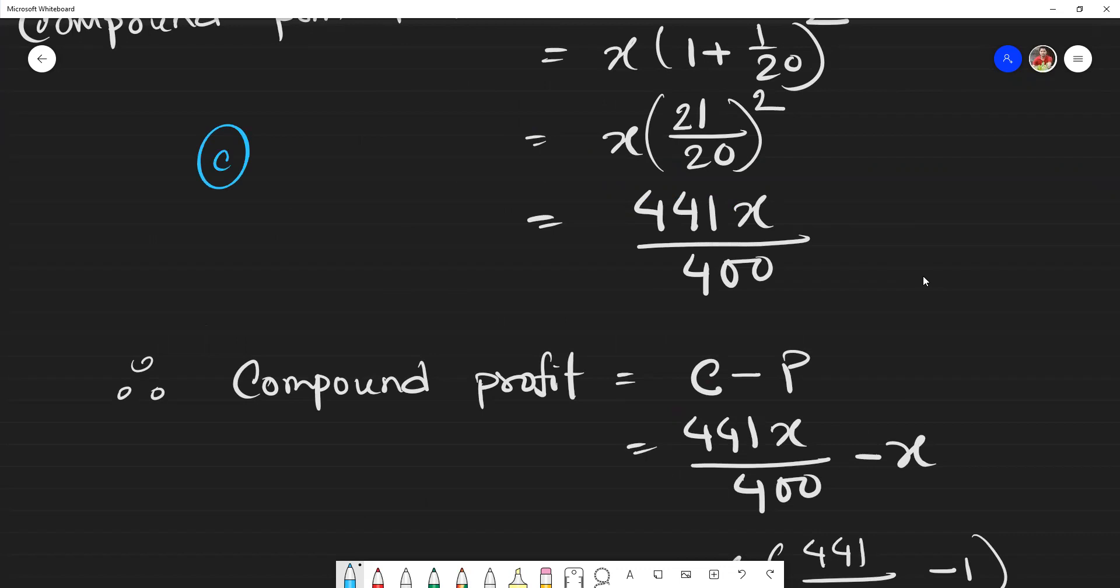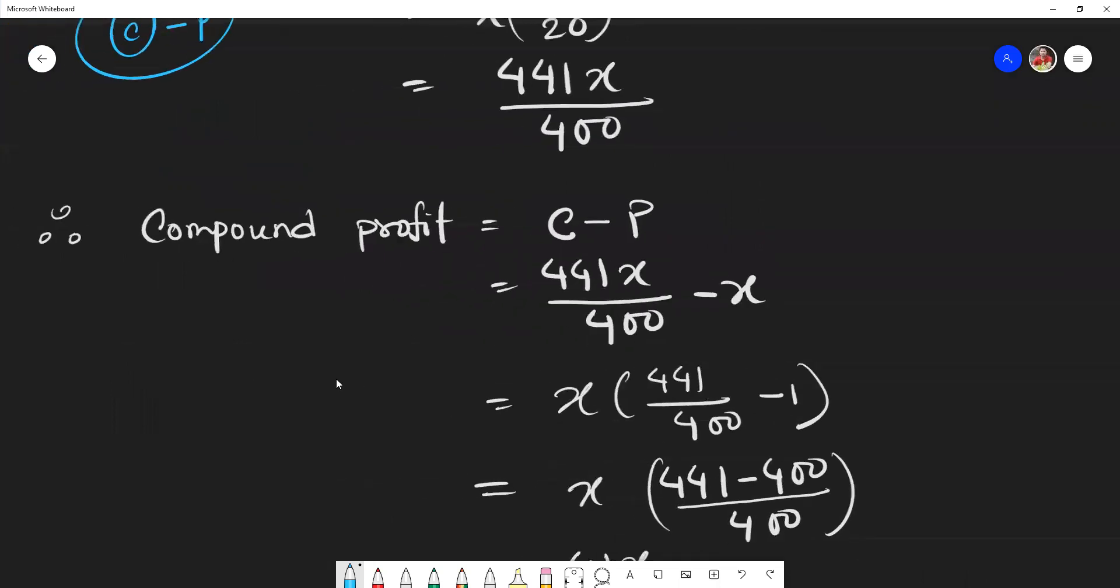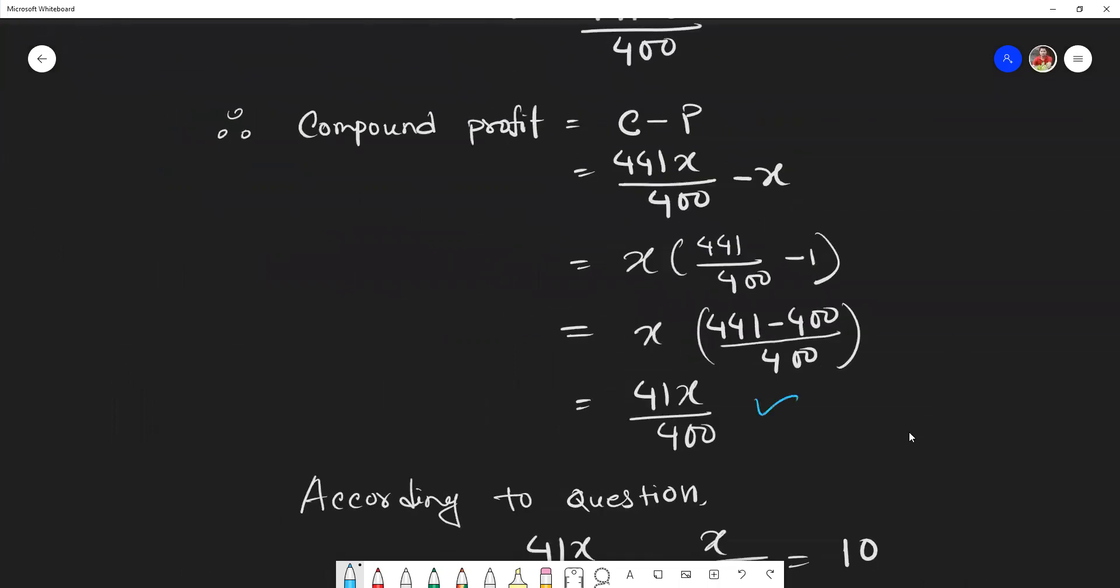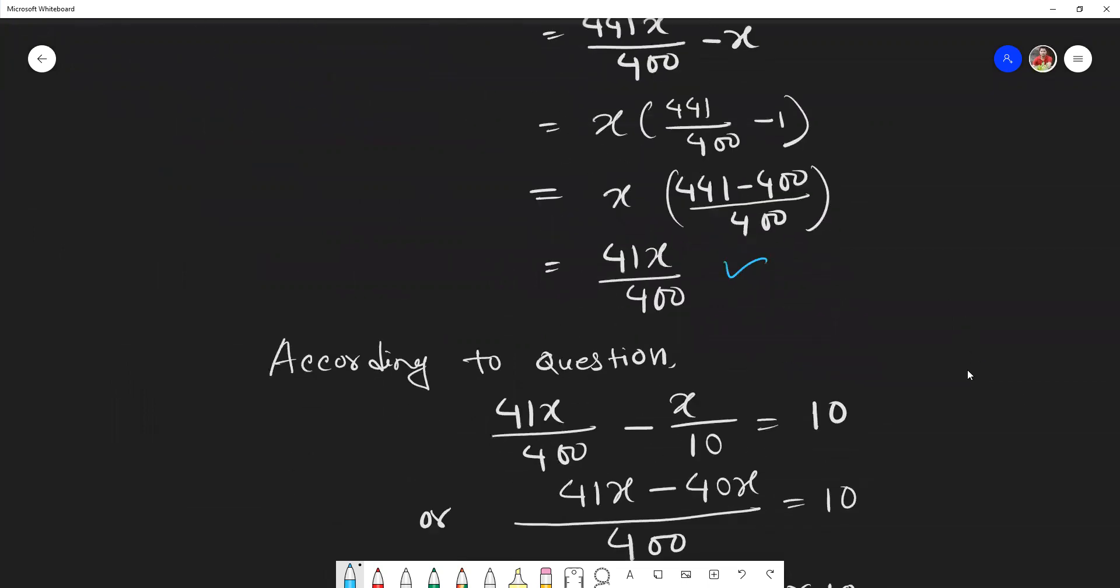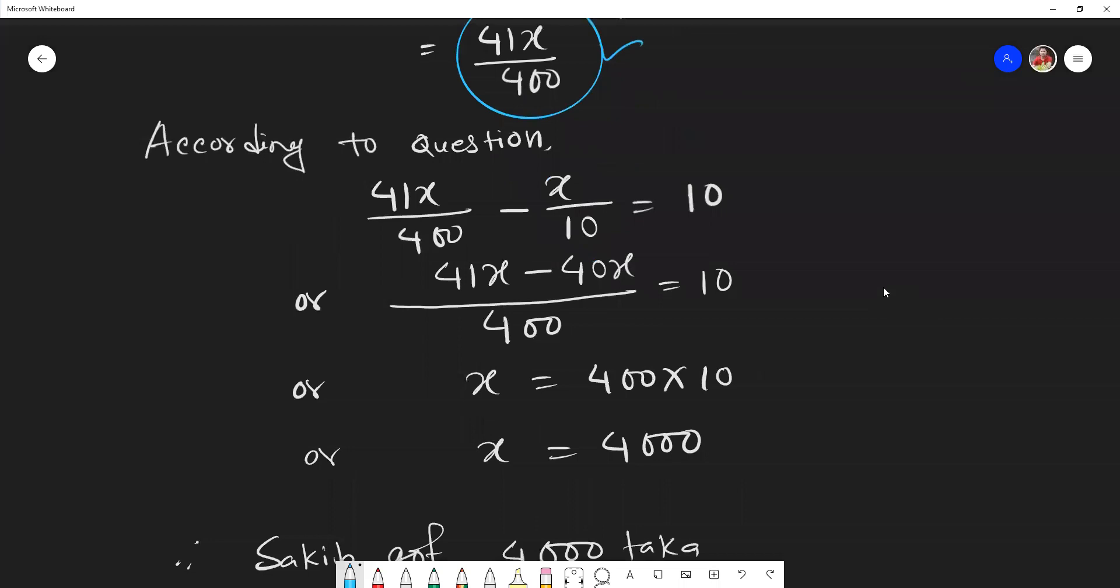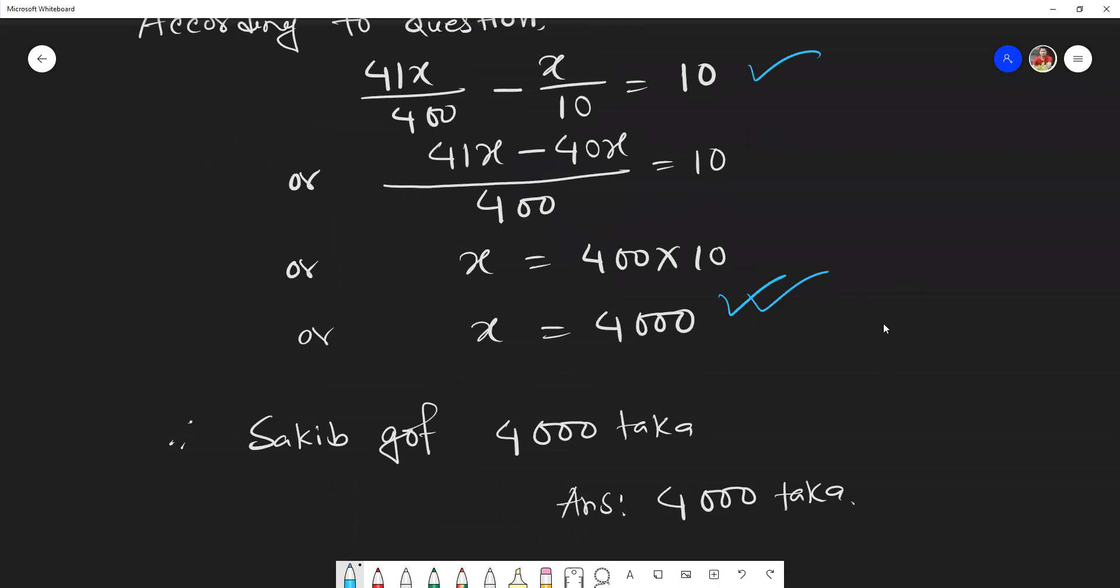Compound profit equals C minus P. C value is 441x/400 minus x. Taking x common, this equals 41x/400. According to the question, compound profit minus simple profit equals 10 taka. After doing the LCM and calculation, we get x equals 4,000 taka.